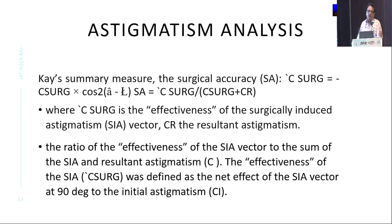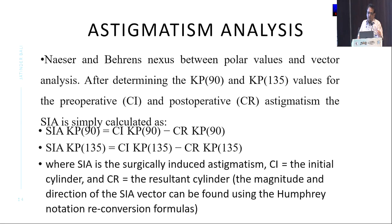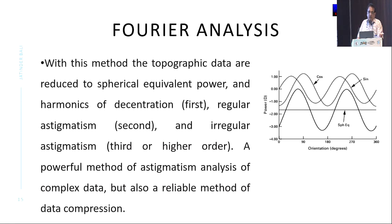Kato tried to put one number to the astigmatism so that you could compare different things. He came up with the concept of surgical accuracy, which measures the effectiveness of your surgery. Nasser and Behrens then suggested decomposing the vector into 90 degrees and 135 degrees components, and using vector analysis thereafter. This allows you to use Fourier analysis, and you'll realize it is not linear — it is a sine wave, it increases and decreases.